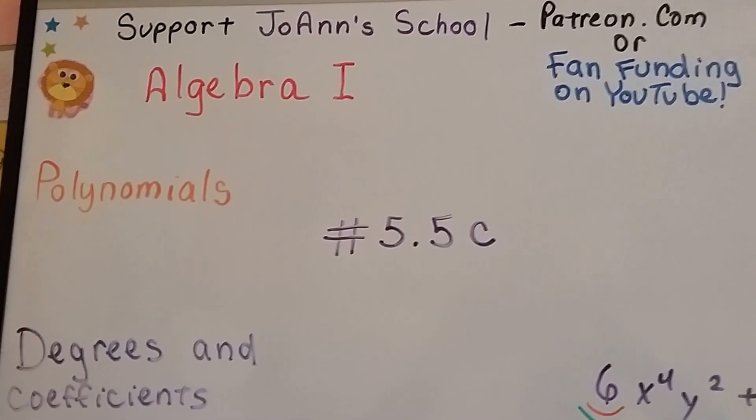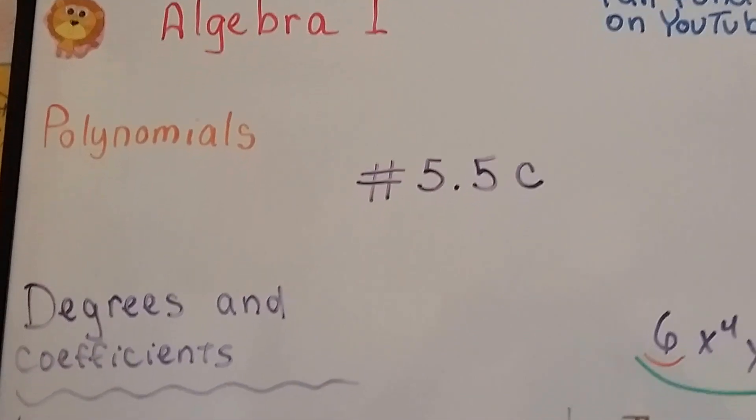Algebra 1 number 5.5c, we're still talking polynomials, and this is degrees and coefficients.